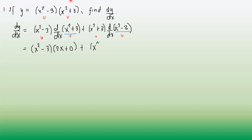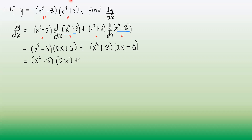Plus the quantity x squared plus 3, times the derivative of x squared minus 3. Again applying the power rule: bring down the 2, x raised to 2 minus 1, so we have 2x. Minus 0. Now we're going to simplify. So we will have x squared minus 3 times 2x, plus x squared plus 3 times 2x. We're going to distribute 2x and multiply.